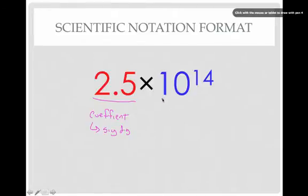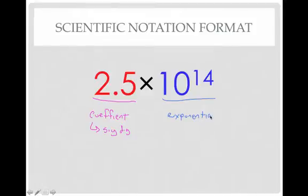The term out here, this 10 to the 14th, is what we'll call the exponential term. These are where we have all of our placeholder zeros. The purpose of scientific notation is to focus the number on the actual measured component, which we're interested in science, and then get all that placeholder stuff, which we need for math, get it kind of all tucked away to the side so we can focus just on the part that's actually the measured value.